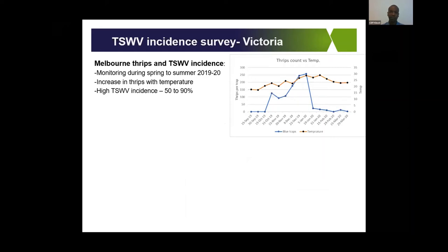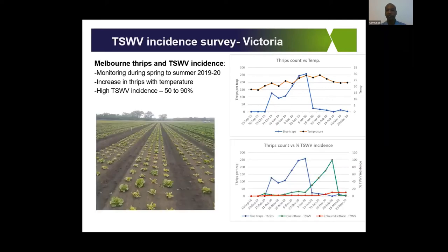Due to high incidence and severe outbreaks observed in the Melbourne region, we conducted a survey from 2019 into spring and summer 2020 to see if weather events were associated with high incidence. One thing we found is that with increasing temperature from spring into summer, we see an increase in the number of thrips captured from traps placed in lettuce crops. In the graph below, green represents green lettuces, red represents colored lettuces, and blue represents thrips numbers — around December to January we had the highest incidence of thrips.